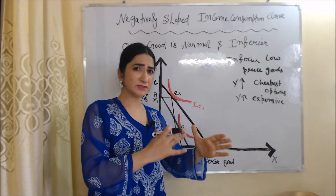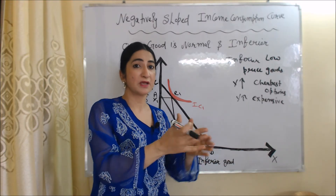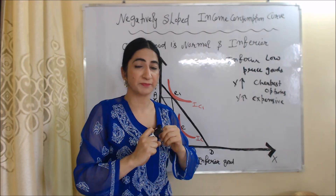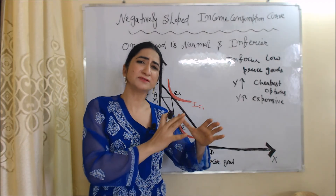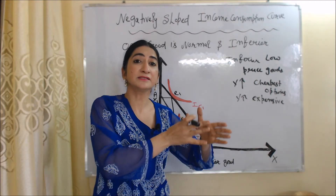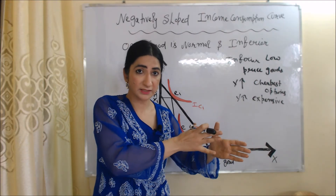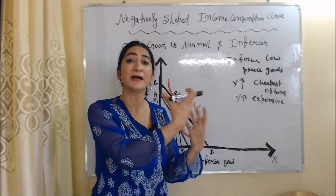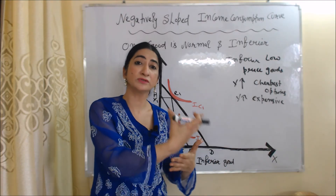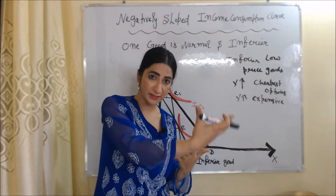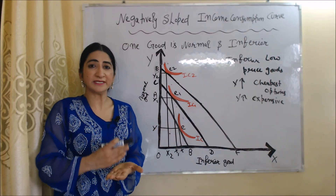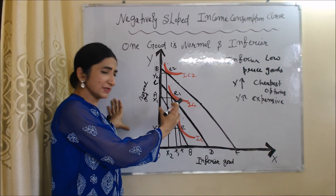When our income is low, we look for the cheapest option, but when our income increases, we look for expensive options. For example, when someone's income is very low, they usually buy non-branded local shoes, but when their income increases, they stop buying local shoes and start buying branded shoes. So as income increases, we reduce the demand for inferior goods and increase the demand for expensive goods.